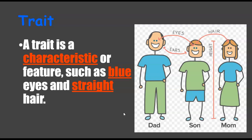A trait is a characteristic or feature, such as blue eyes, straight hair, height, ear lobes, fingers, or whether your tongue rolls or folds. Any of those are traits.